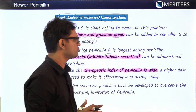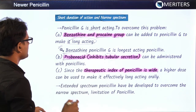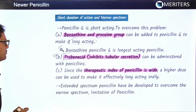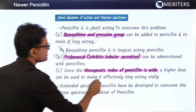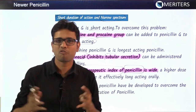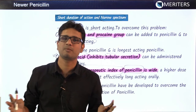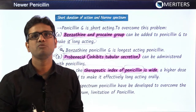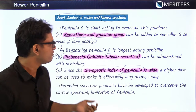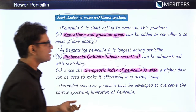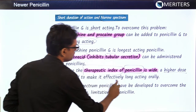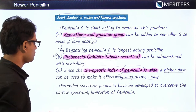Probenecid inhibits the tubular secretion of penicillin, making it stay longer in the blood plasma and produce its therapeutic effect for a longer time. Additionally, since penicillin has a wide therapeutic index, we can give a higher dose to make it effective and long-acting when given by the oral route.